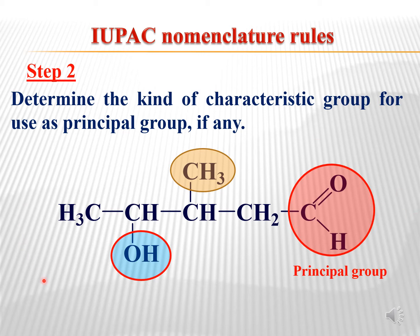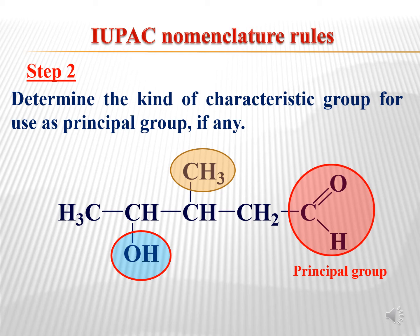Now let's come to the second step. This step involves the determination of the kind of characteristic groups present on the structure, and we have to decide which group will be the principal group. This step is applied when a structure has multiple functional groups. Here you can see three functional groups: aldehyde, methyl, and hydroxy (OH). The two major groups — aldehyde and hydroxy — are highlighted in red and blue. By comparing their priority using the priority table, we can determine that the aldehyde group is the principal group.